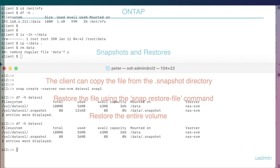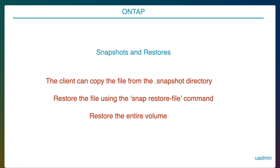Now to restore this file we have three options. We can let the NFS client copy the file from the snapshot back into the active file system. The second option is that in ONTAP we can restore the file using the snap restore file command. Or we can restore the entire volume. The third option is not a problem in this case, but if we would have had multiple files and just wanted to restore this 35 MB file, we should not restore the entire volume because that would set back all files in time.